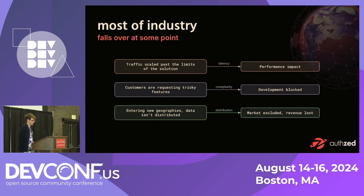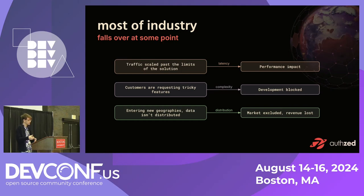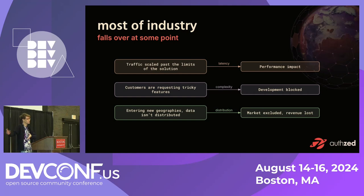That causes you to refactor code. Or customers request a new feature that isn't possible without refactoring your authorization code — for example, maybe people want to add peer-to-peer sharing of individual resources in your application, adding complexity you didn't account for. You could also face a non-technical problem: your business needs to target a new market across an ocean, and because your primary database lives in one continent but the new market is in another, it's prohibitively latency-expensive to query across that.